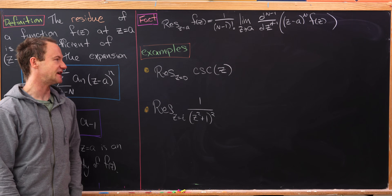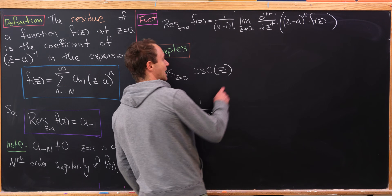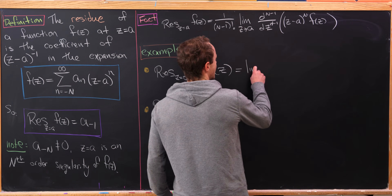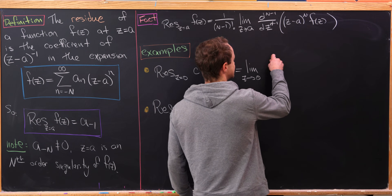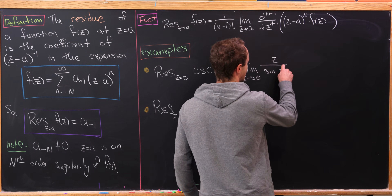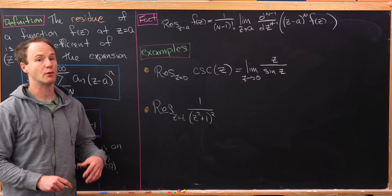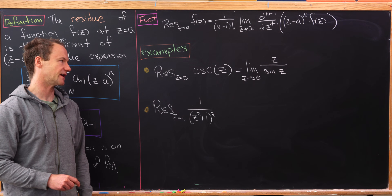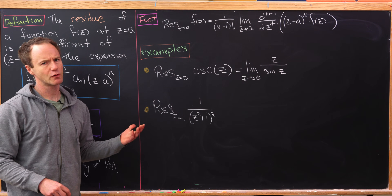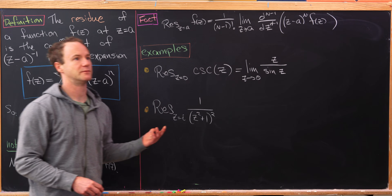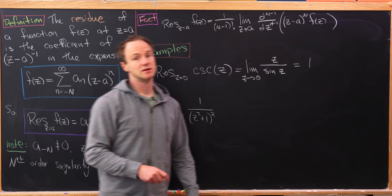Let's do a couple of examples. The residue at z equals zero of cosecant — recall cosecant is 1 over sine — can be calculated as the limit as z goes to 0 of z over sine(z), given that z equals 0 is a first order singularity of cosecant. That's a well-known limit from first semester calculus and is in fact equal to 1.